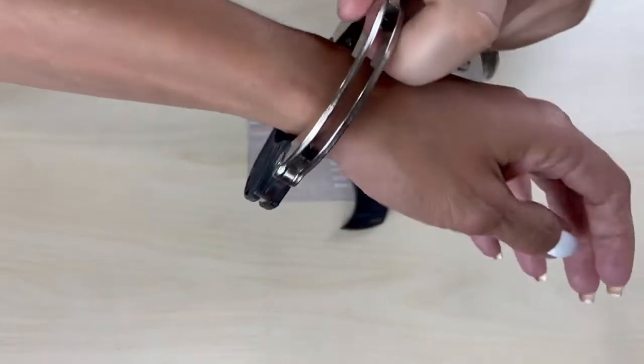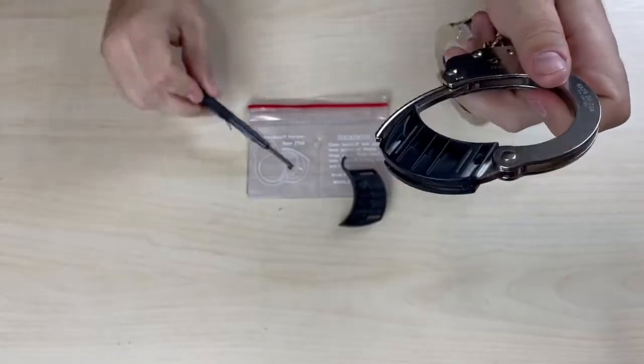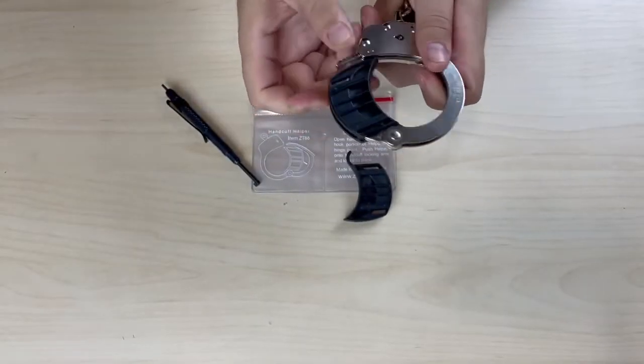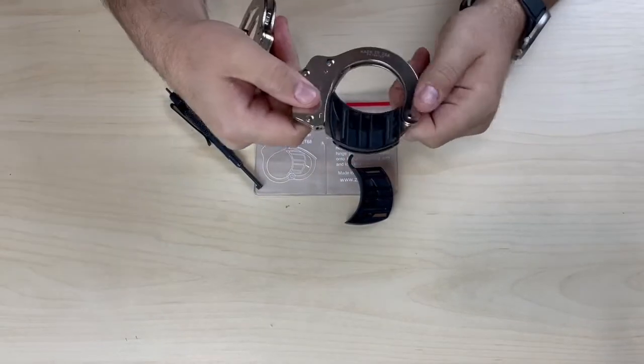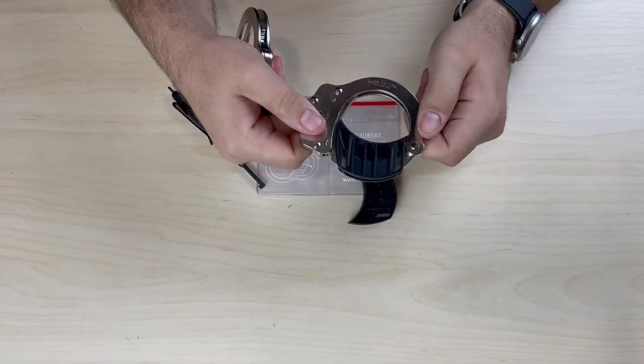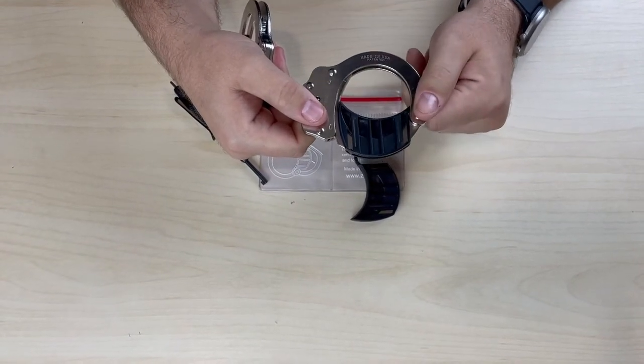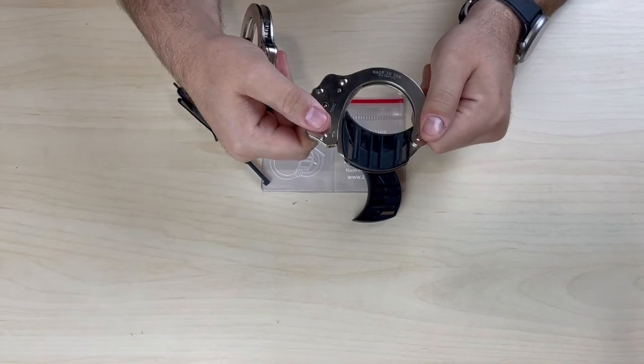I'm going to release her there, make it a bit more comfortable. That guys is the Zack Tools handcuff helper, the ZT-68, and that's available on our website at guardianoutfitters.ca or in store. Thanks guys.